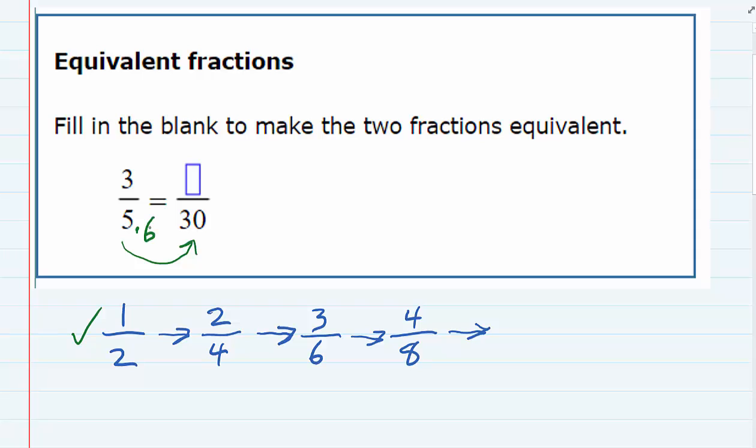The question is what do I multiply 5 by to get 30? And 6 will work. 5 times 6 will give me the 30. But our rule is for equivalent fractions I have to multiply the top and the bottom by the same thing. So if I multiply the bottom by 6, I have to also multiply the top by 6.